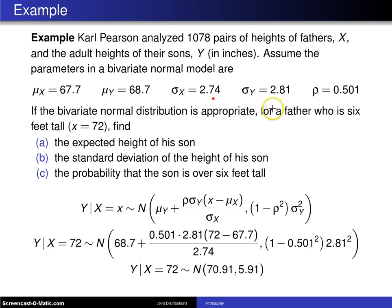So here are the questions, assuming that these are the appropriate parameters, even though they were taken from data. And that is for a father who is 6 feet tall, that is X equals 72, find the expected height of the son, find the standard deviation of the height of the son, and the probability that the son is over 6 feet tall.